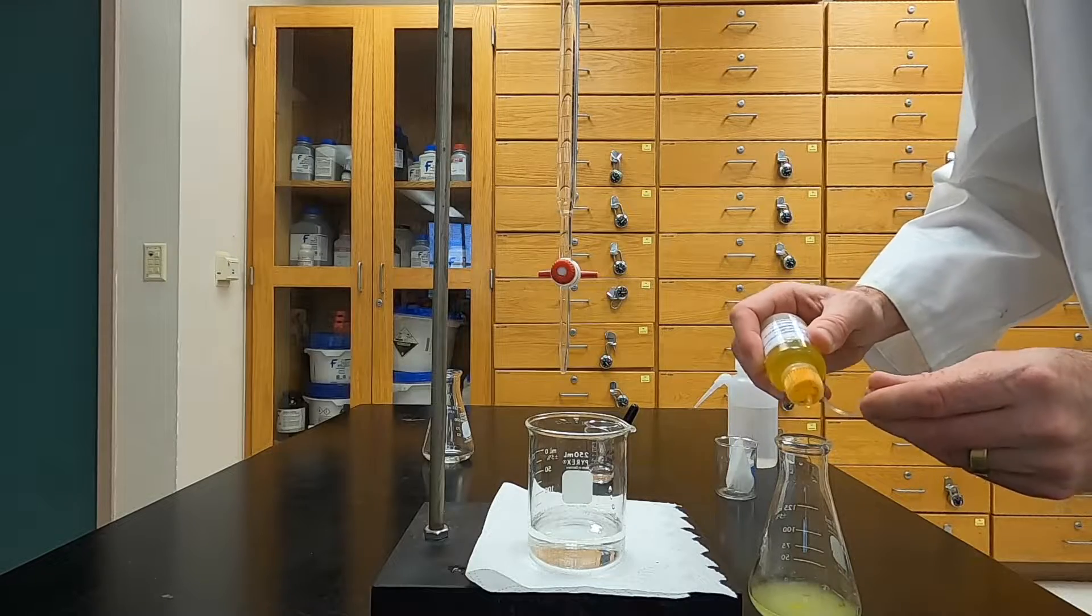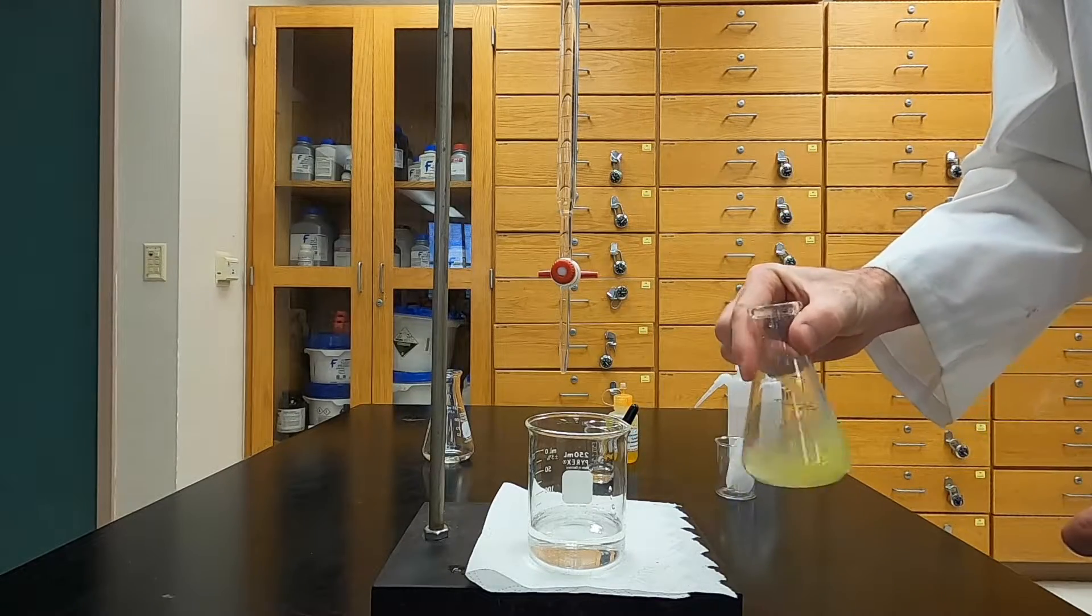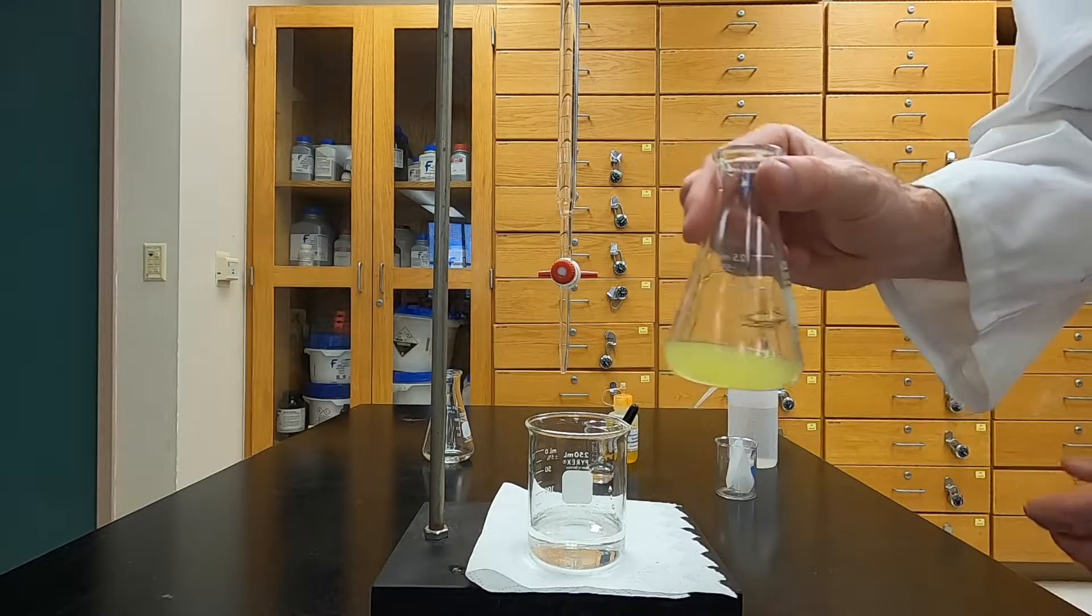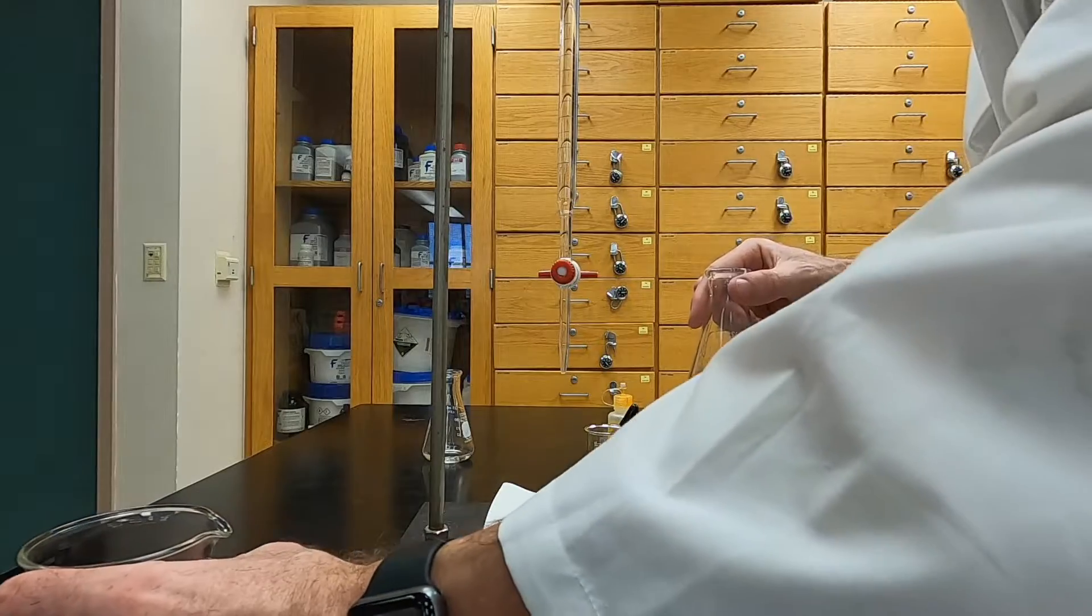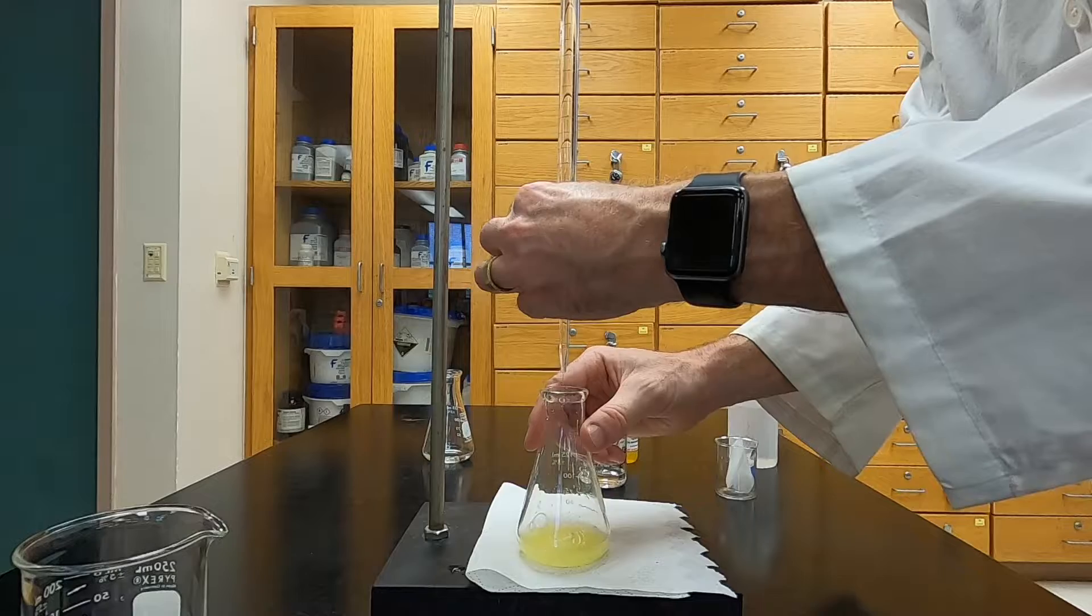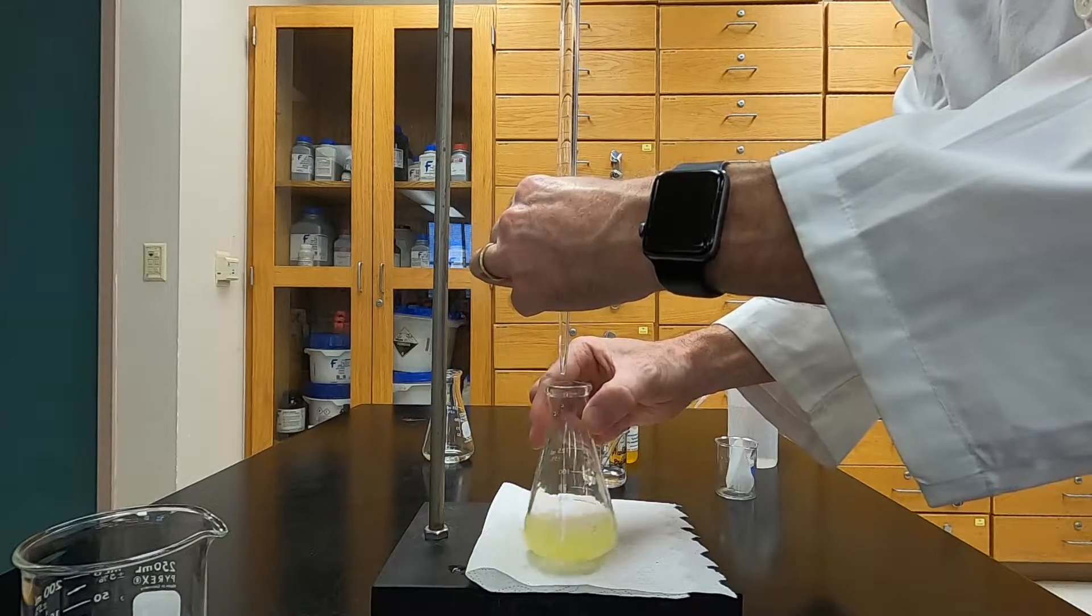Finally, you'll add some of the dichlorofluorescene indicator to the solution. We're adding the indicator now before we even start doing the titration, but once you know roughly the endpoint of your titration, you'll want to add the indicator closer to that endpoint. This helps ensure you get a crisp endpoint and don't reduce too much of the silver due to the photoreactive nature of it.